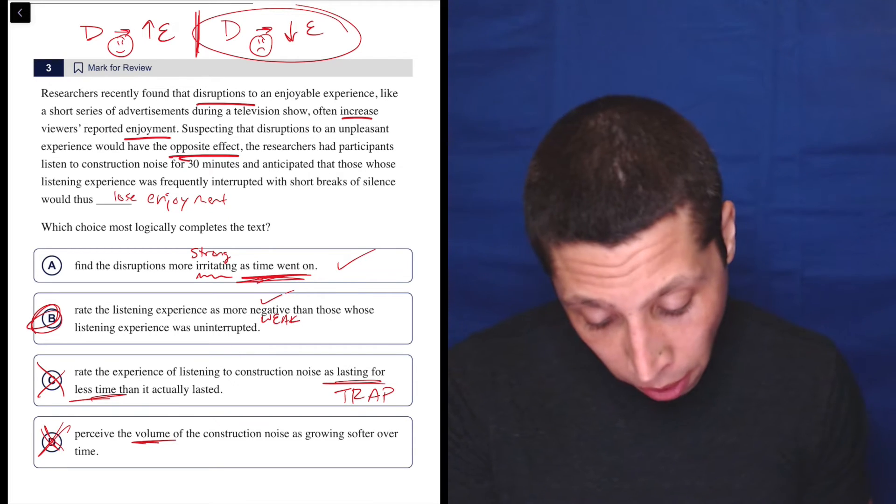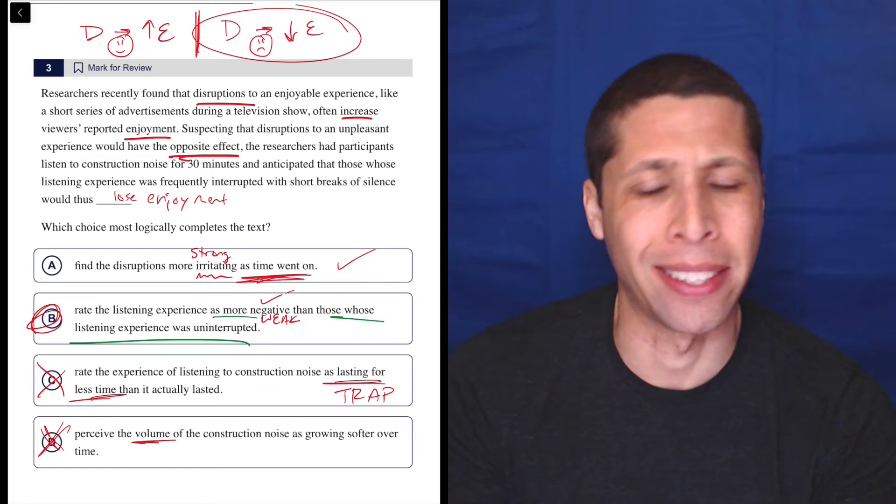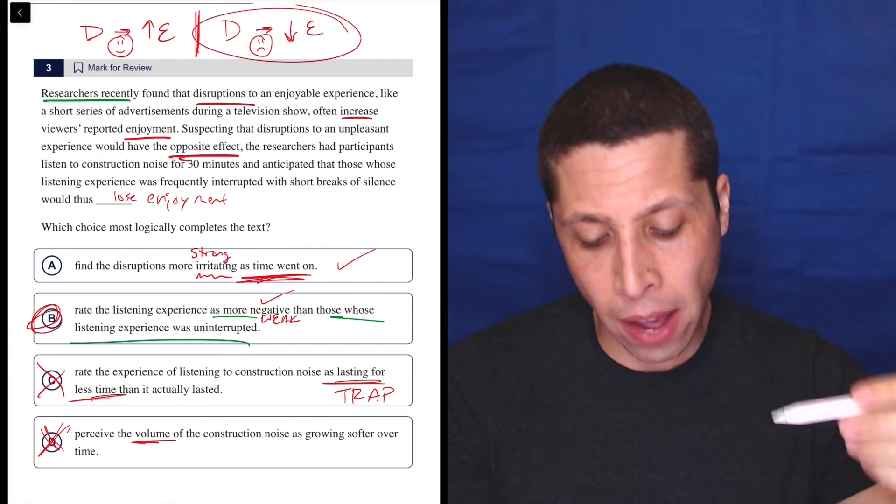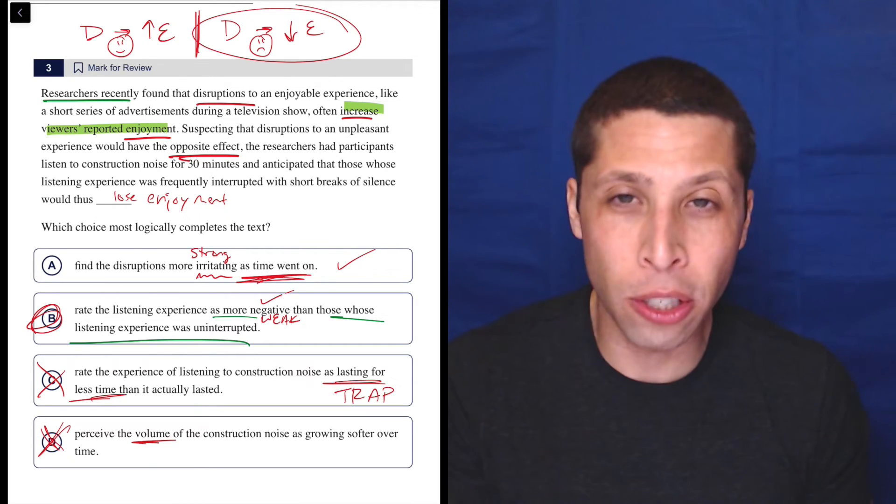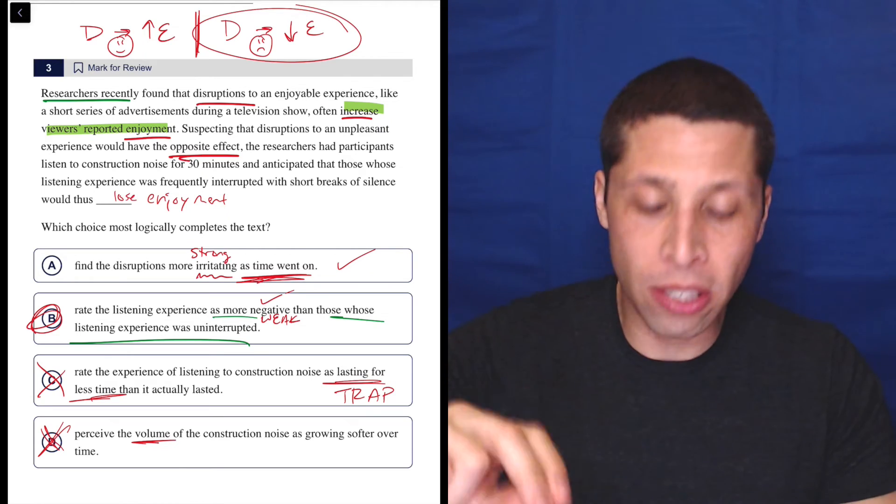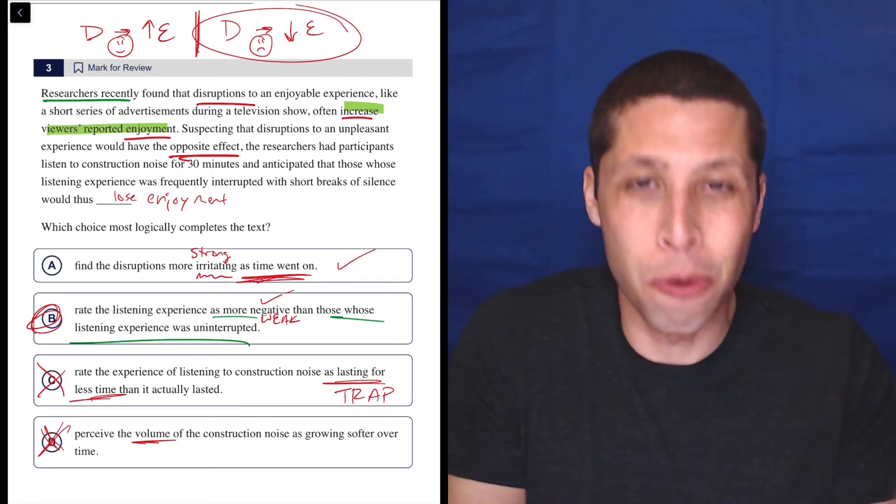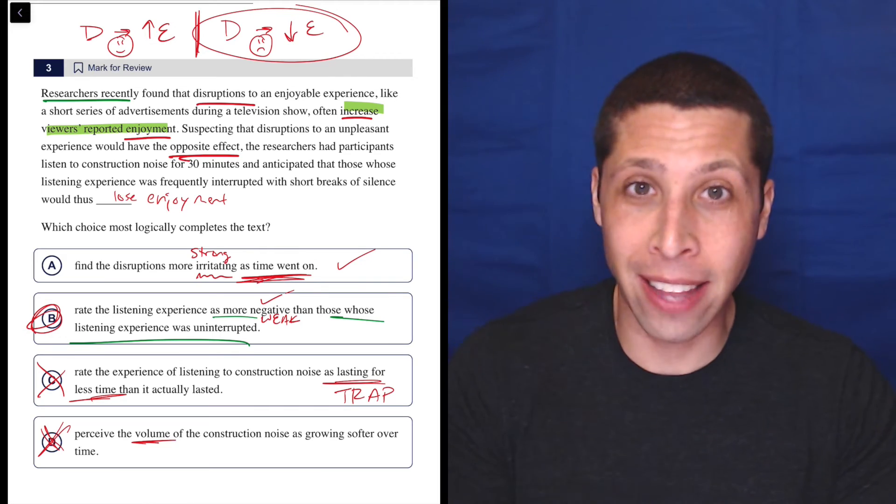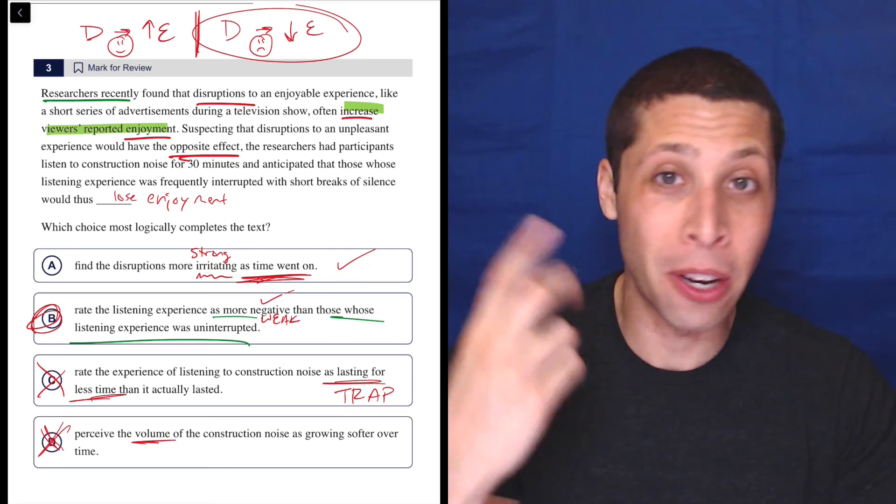Now, the one problem with B I will talk about that a lot of people have trouble with is this idea of a comparison. It's more negative than those whose listening experience was uninterrupted. And you're like, well, they didn't talk about that in the passage. And I kind of agree, but I do feel like this is where the inference part of these inference questions comes in. It's very strongly implied at the beginning. Researchers recently found that disruptions to an enjoyable experience, like a short series of advertisements during a television show, often increase viewers' reported enjoyment. How can you increase enjoyment? Compared to what, right? It has to be compared to something. So it's implied in that sentence that the disruptions are increasing enjoyment compared to not having the disruptions. That's literally just how science works is you have two groups and you compare how the groups interact or are changed by a particular stimulus. So this is very fundamental to science and it's strongly implied by the passage. So we are literally just flipping that first sentence and saying, okay, if you had two groups, one had construction noise interrupted, one didn't, what would be the result?